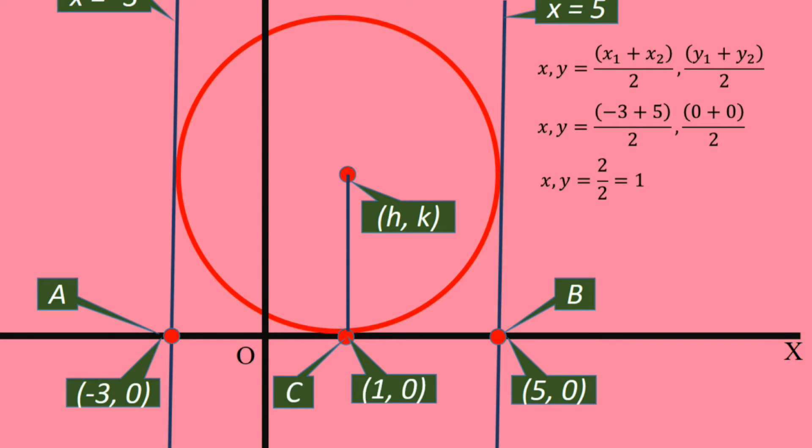Point C lies one unit distance from y-axis. From C goes straight up to the center of the circle. h also must lie one unit distance from y-axis. Hence, h is 1.